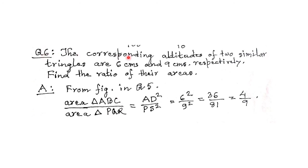Question number 6. The corresponding altitudes of two similar triangles are 6 cm and 9 cm. Find the ratio of their areas. Area of ABC / area of PQR = AD² / PS² = 6²/9² = 36/81. Simplifying by dividing both by 9: the ratio is 4/9.